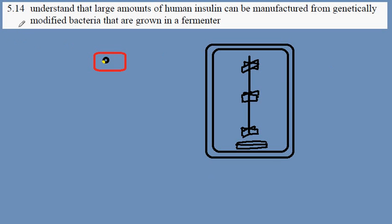IGCSE Biology, Syllabus Statement 514. We're looking at the production of human insulin in a fermenter.